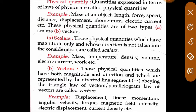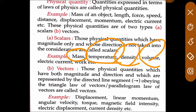Physical quantities are of two types: scalar quantity and vector quantity. Scalar quantities are those physical quantities which have magnitude only, and whose direction is not taken into consideration. For example, mass, temperature, density, volume, electric current, and work are scalar quantities—they only have magnitude or value.